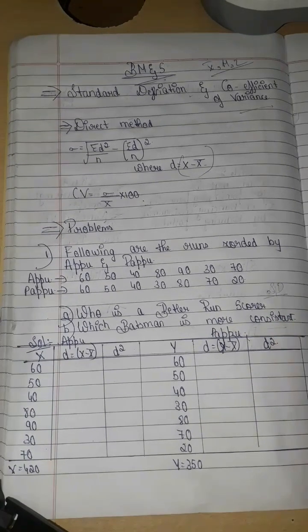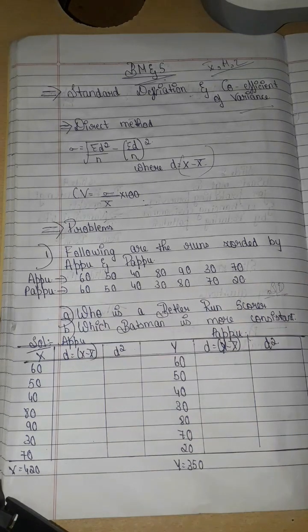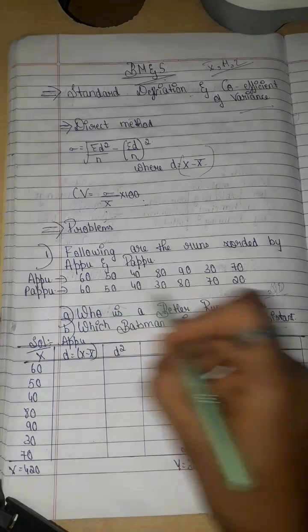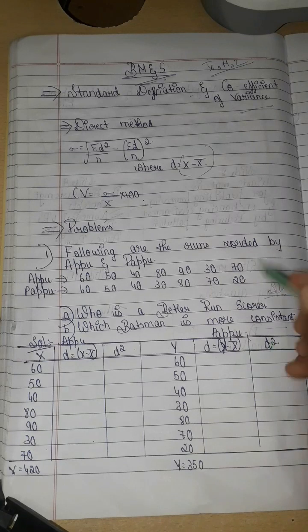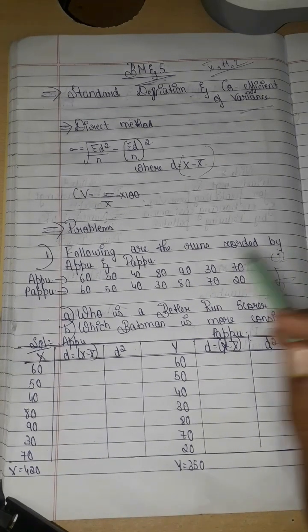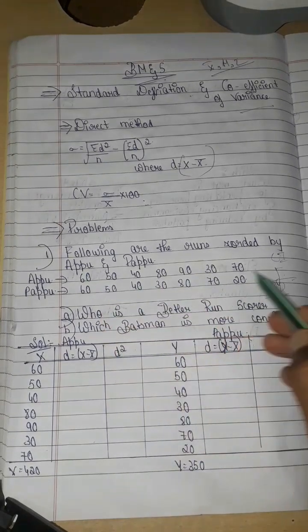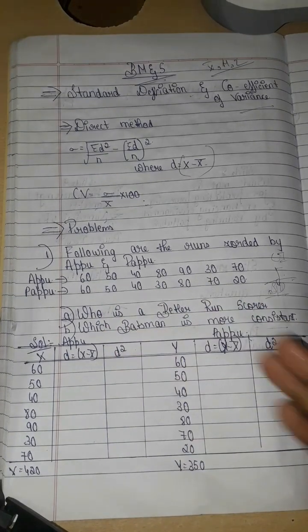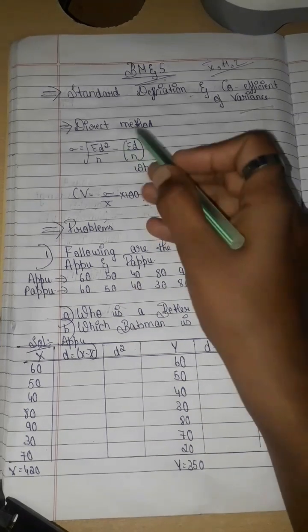We will explain what standard deviation is and what frequency is. We will explain direct information. If we have frequency, we follow that method. But here we have direct information — the numbers as they are — no class intervals. So we will use the direct method.